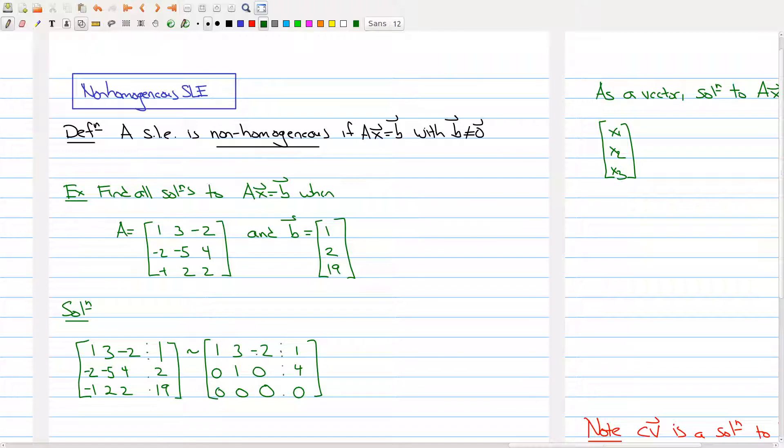When I put it into echelon form, I get this shape right here, and I see that I have a free variable. I don't end up with a case where a pivot is in this spot, so I know there exists a solution. Let me take it one step further and put it into reduced row echelon form.